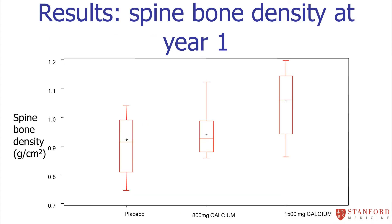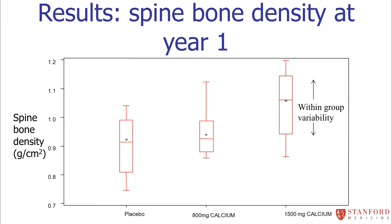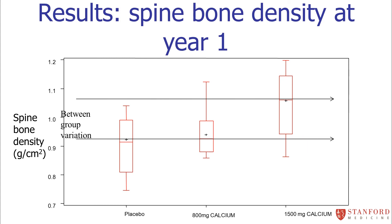Going back to our spine bone density example: the within-group variability is represented by the spread of the box plots — that's the background noise in spine bone density. We're assuming that variability is roughly the same across the different groups; our variances are pretty similar, so it's fine to pool them. We want to know: does the difference in means between the groups exceed that background noise? The between-group variance is represented by looking at the means of the three groups, shown as plus signs. That's what ANOVA is set up to answer.